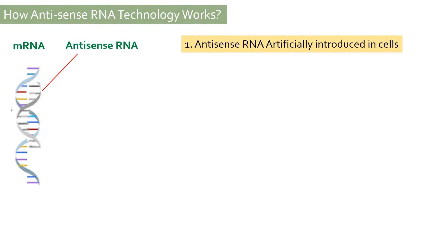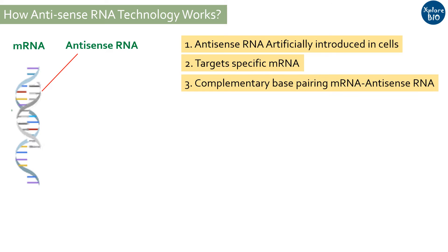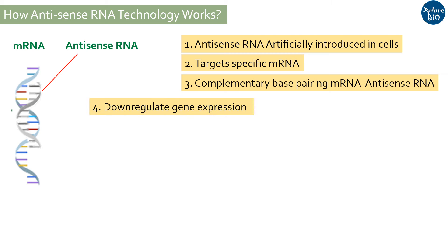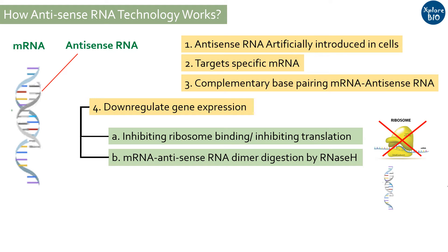The antisense RNA molecule is artificially introduced into the cells and it specifically binds to the target mRNA based on sequence complementarity in the cytoplasm of the cell. This results in down-regulation of the gene by one of two mechanisms: the formation of an mRNA and antisense RNA duplex may prevent ribosome binding and thus stops the translation process for protein synthesis, or the duplex undergoes digestion by RNase H, which also prevents protein synthesis.